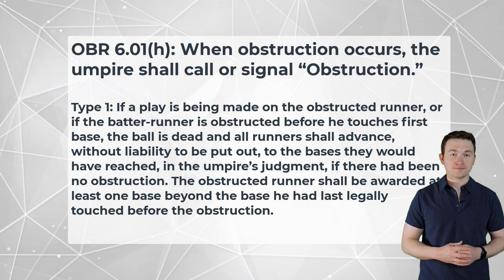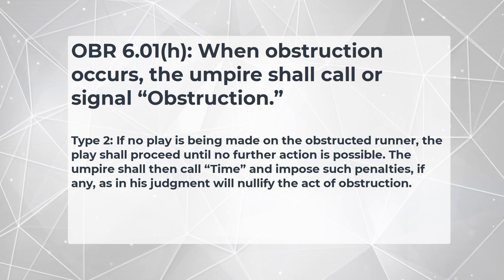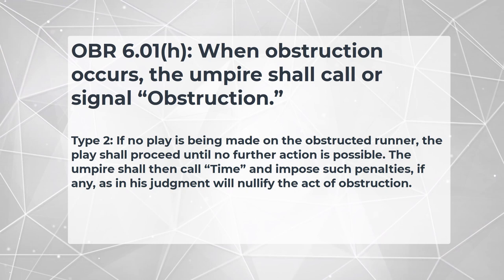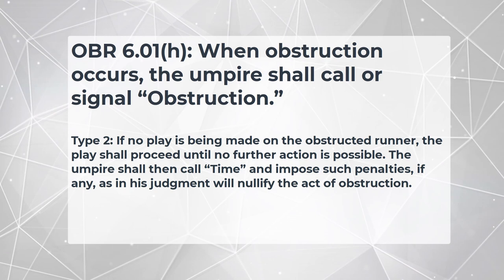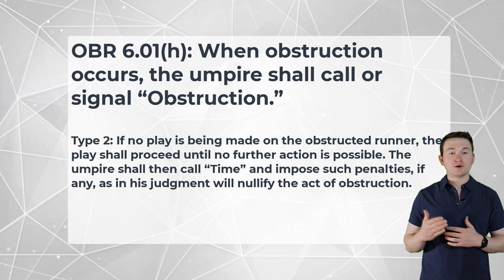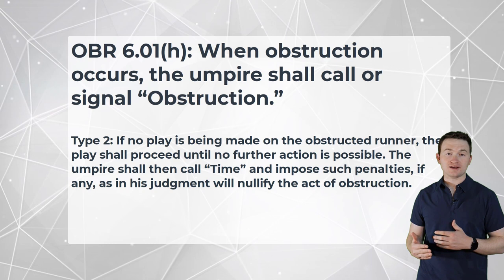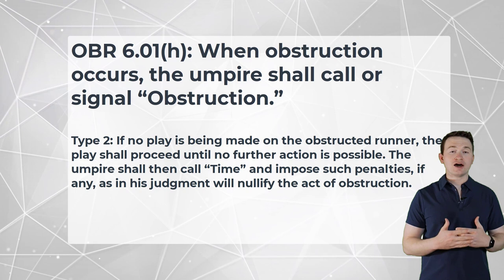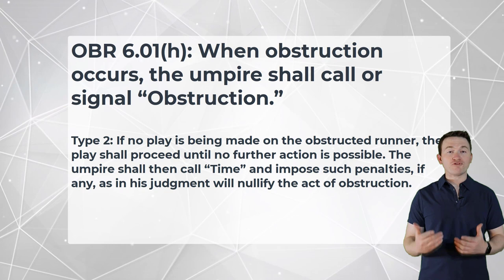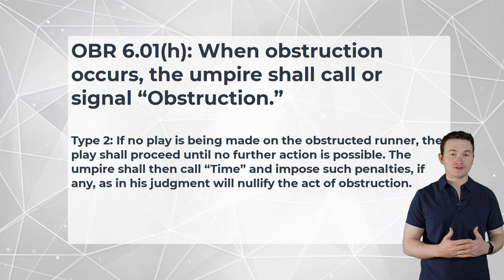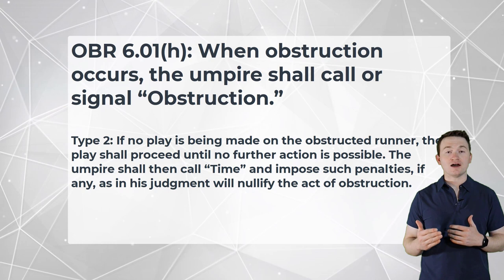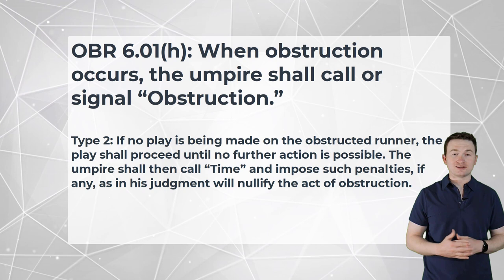Next, let's look at Type 2. If no play is being made on the obstructed runner, the play shall proceed until no further action is possible. The umpire shall then call time and impose such penalties, if any, as in his judgment will nullify the act of obstruction. A major difference here is that in Type 2 obstruction, since there's not a play actively being made on the runner when he is obstructed, we're going to have a delayed dead ball. Once the playing action ends, the umpires will look to enforce any penalties. The obstructed runner is not automatically awarded the next base.